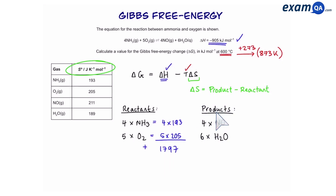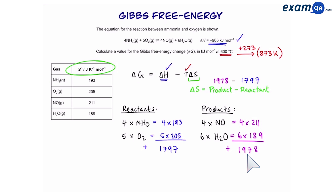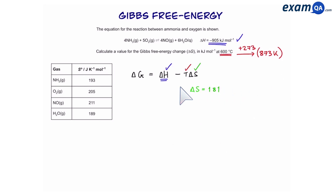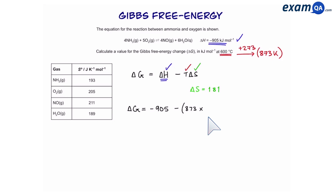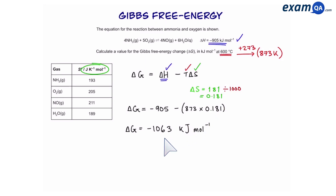Using the table, we add those together and that gives us 1797 — the total entropy of the reactants. We do the same for the products: 4 molecules of nitrogen monoxide and 6 water, which adds up to 1978. Then products take away reactants gives us 181. So now we have all three components of the equation. Plugging them in: minus 905 for enthalpy, take away temperature in Kelvin, times entropy. The entropy is in joules, so we divide by 1000 to convert to kilojoules. That gives us an answer of minus 1063 kilojoules per mole.